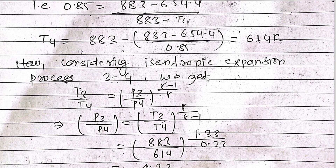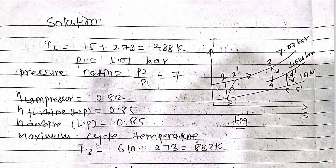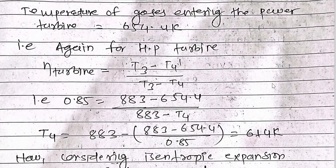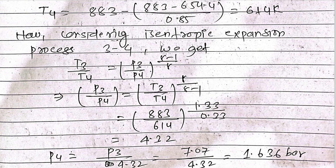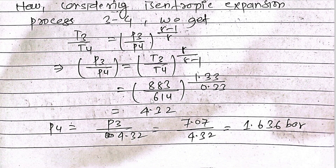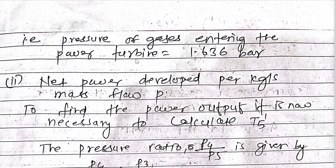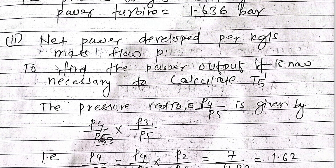Considering the isentropic expansion process from state 3 to 4 on the TS diagram, we apply: T3/T4 = (P3/P4)^((gamma-1)/gamma). Substituting all known values, we solve for P4 and obtain P4 = 1.636 bar. Therefore, the pressure of the gas entering the power turbine is 1.636 bar.